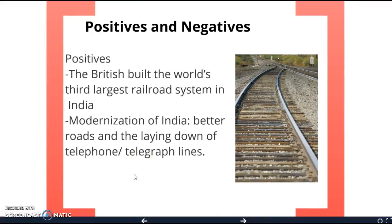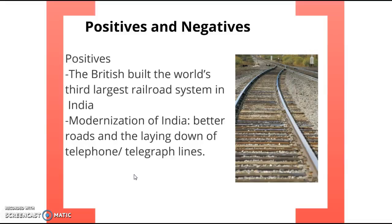India did get some big positives out of this relationship. Because India was such an important colony, the British Empire spent a lot of money making it more efficient and profitable. They built really great high-quality railroads — at the time the third largest railroad system in the world — which was important for trade and long-term economic growth. They also brought their technology with them; in particular, telephones and telegraph lines were installed in India far ahead of the rest of the world, giving India lots of advantages that typical colonies were not getting.